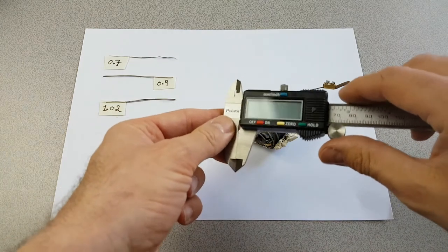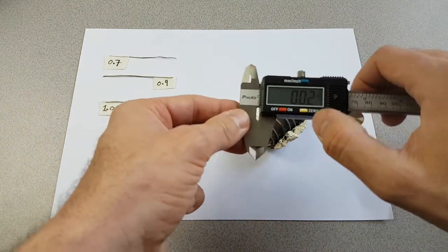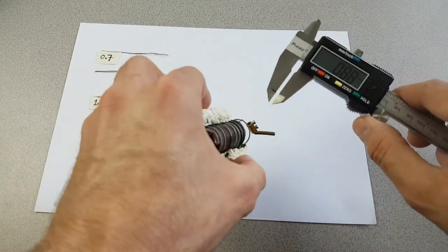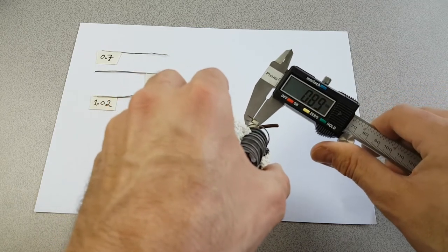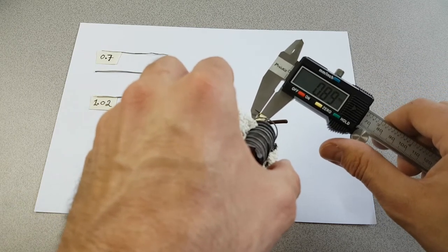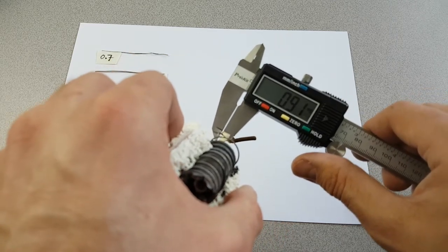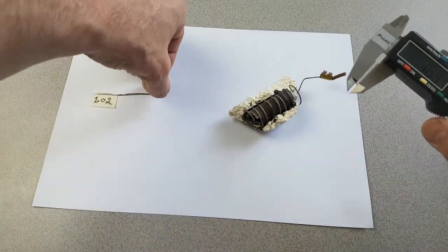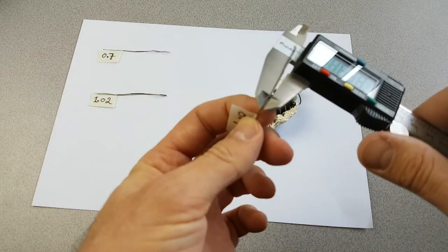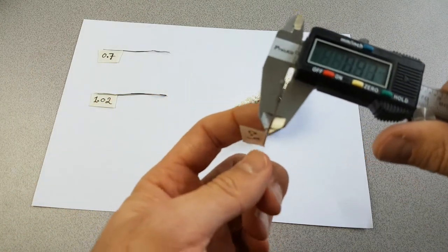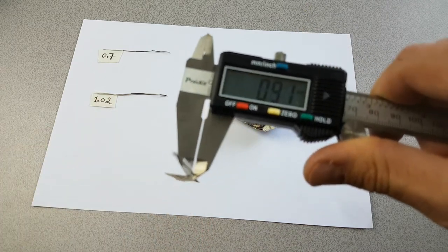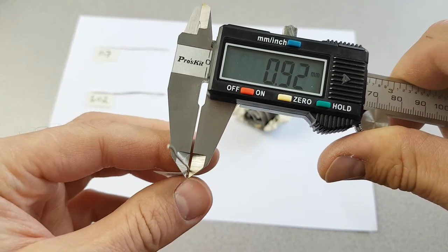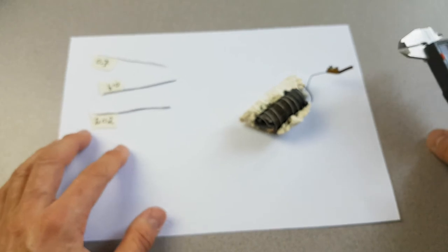Now, I have a micrometer here, and I'm going to turn it on and zero it out. We're going to measure the wire here. So, it's around about 0.9 there. And I'm going to check the 0.9 from the Lion author. It's about 0.9 also.